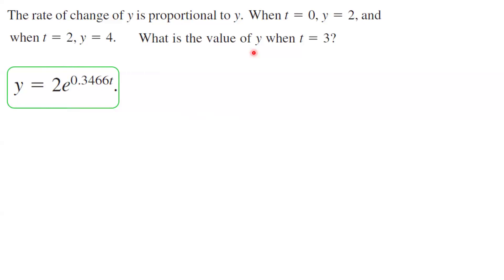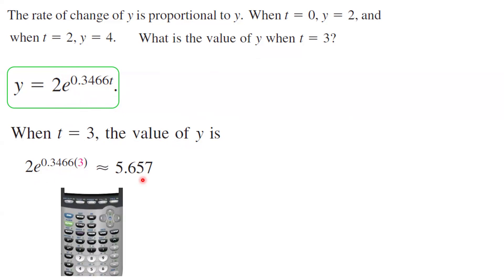This is the mathematical model that we have. When t equals 3, the value of y is 2 times e to power 0.3466 times 3, which is approximately 5.657. Please make sure to use your calculator to get this approximation.